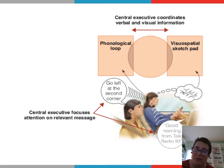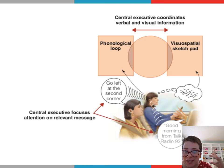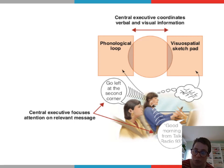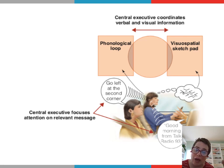Your central executive is also going to help you ignore or filter out the incoming information from the radio so that it doesn't distract you from hearing the directions. So again: the sound of your friend's voice reading you directions is stored in your phonological loop; the mental map you conjure up as you visualize the streets leading to the restaurant is held in your visuospatial sketchpad; and your central executive coordinates attention between those two systems, combines the information from each, and helps you ignore extraneous information from the car radio.